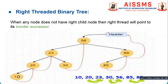Now let us see what is a right threaded binary tree. In this figure we can see node 56 has both left and right child nodes. Node 23 also has both left and right children. Node 20 has only a left child, meaning the pointer to the right child is empty, so we can create a thread from the right child. As per the rule of right threaded tree, this pointer should point to the inorder successor of the given node. The inorder traversal for this binary tree is 10, 20, 23, 30, 56, 85, 89. The inorder successor of 20 is 23, so the right thread from 20 will point to 23.